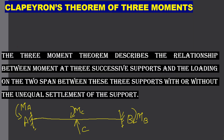You have three supports at A, B, and C and two spans: A–B (span 1) and B–C (span 2). These spans may have different loading conditions — there may be concentrated loads, uniformly distributed load, or uniformly varying load. This is the relationship of moments at three consecutive supports and the loading on the two spans between these supports, with or without unequal settlement of the supports. The support at B, for example, can undergo settlement or have no settlement, and this settlement can be equal or unequal.